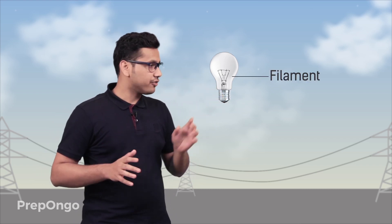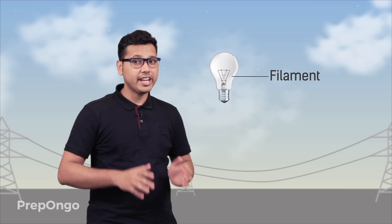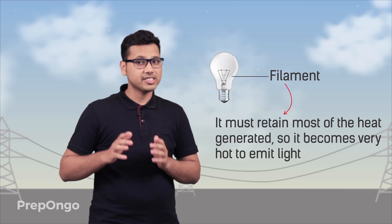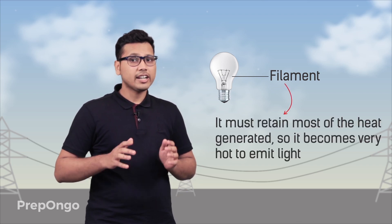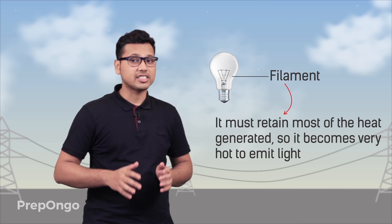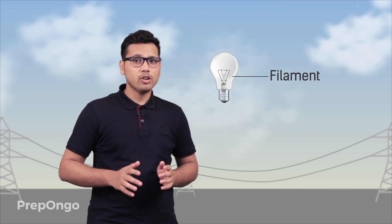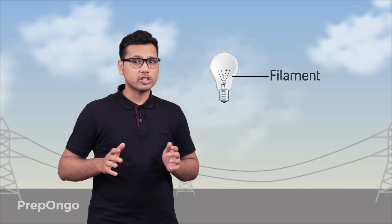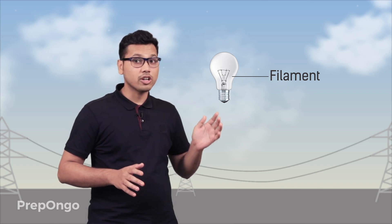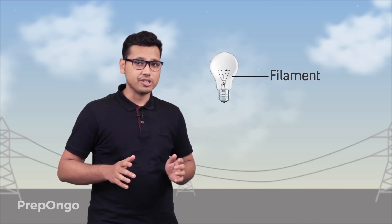In our last videos we had also seen that electric heating can also be used to produce light. This was done by using an electric bulb. Now the filament of this electric bulb must retain most of the heat which is generated so that it gets very hot and starts emitting light. There must also be the condition that this filament should not melt at such a high temperature.